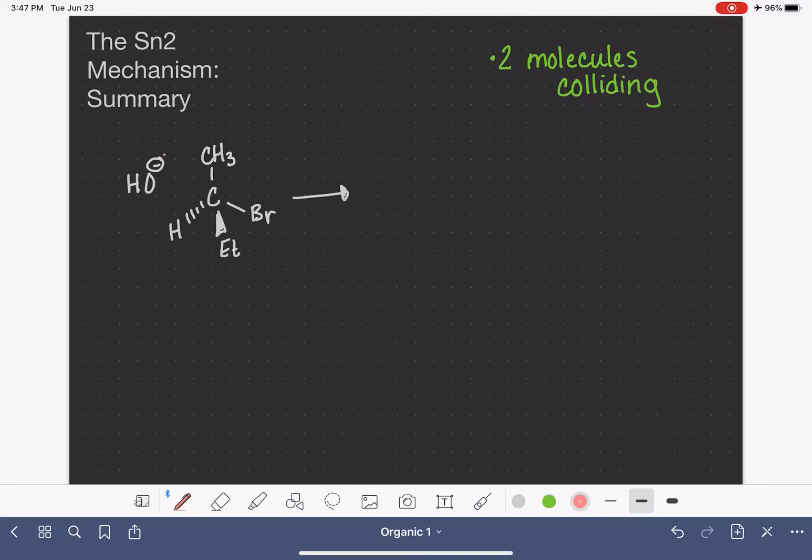So two molecules collide, that nucleophile comes in and attacks the carbon, collides with the carbon, holding the leaving group, which causes the leaving group to be kicked out of the molecule and gives us product.